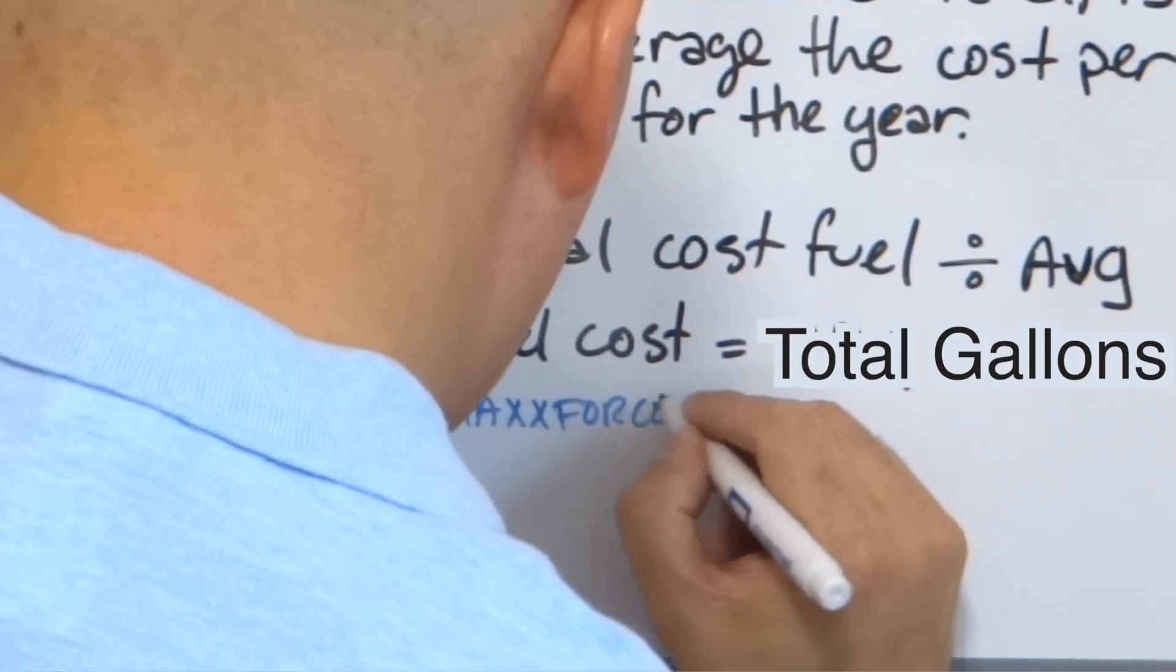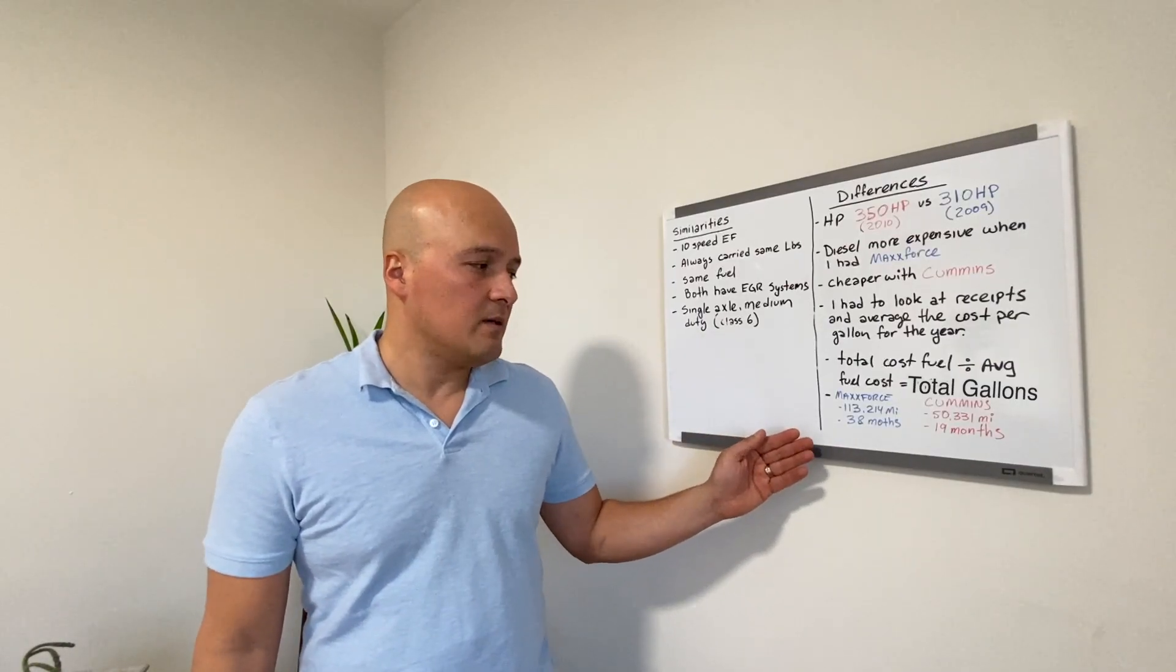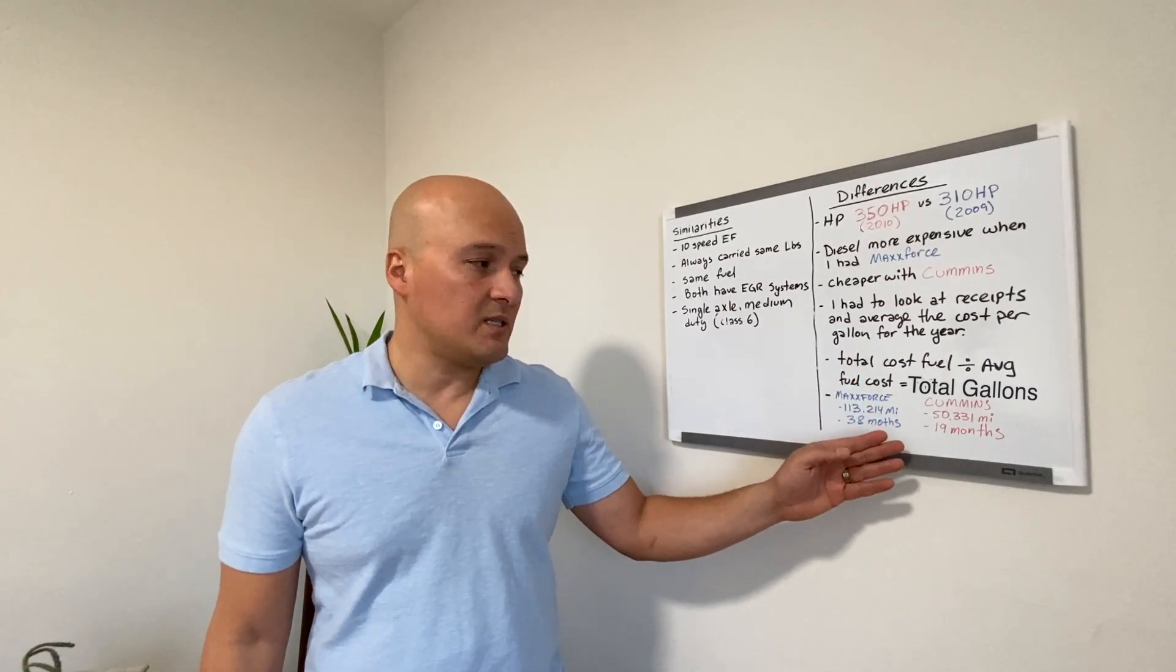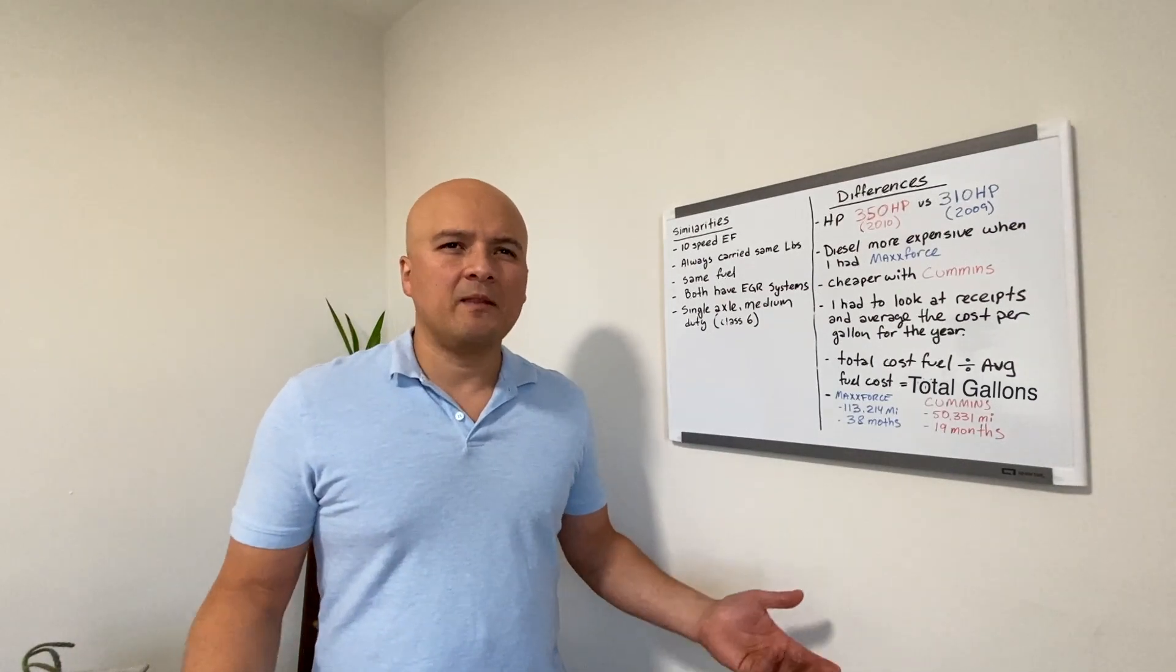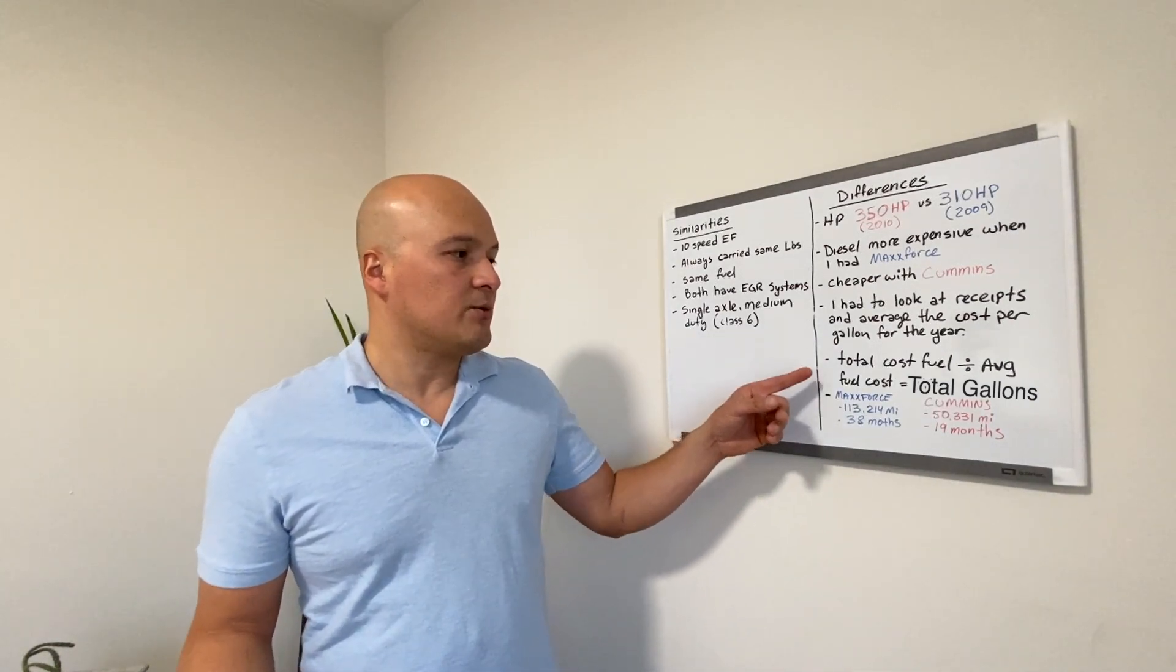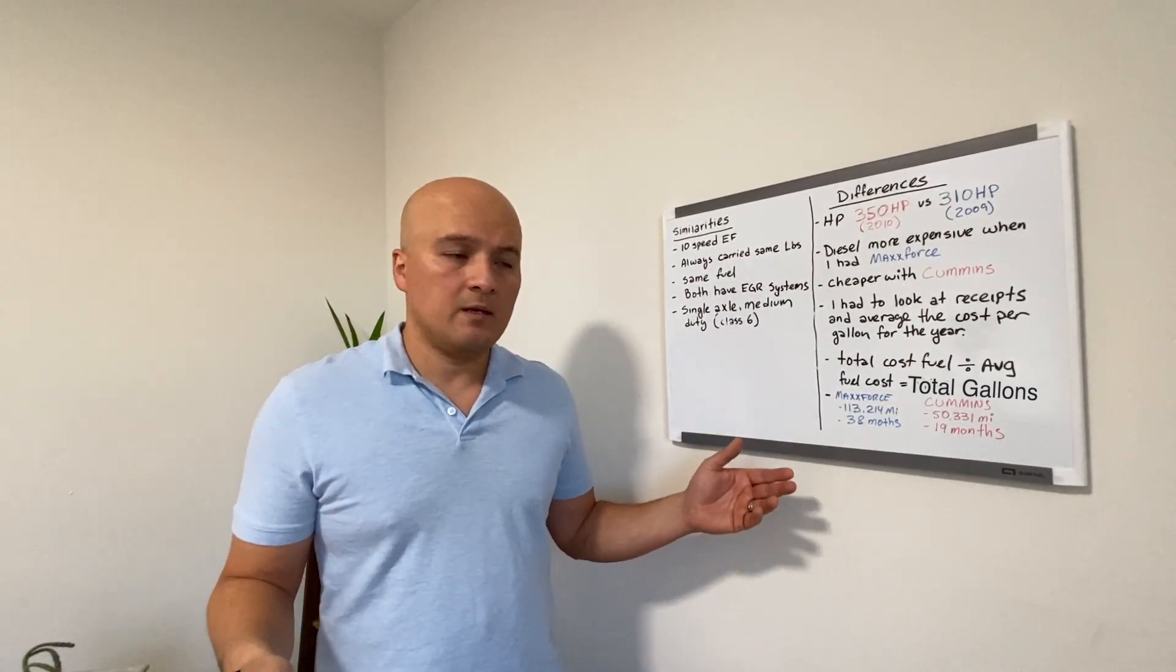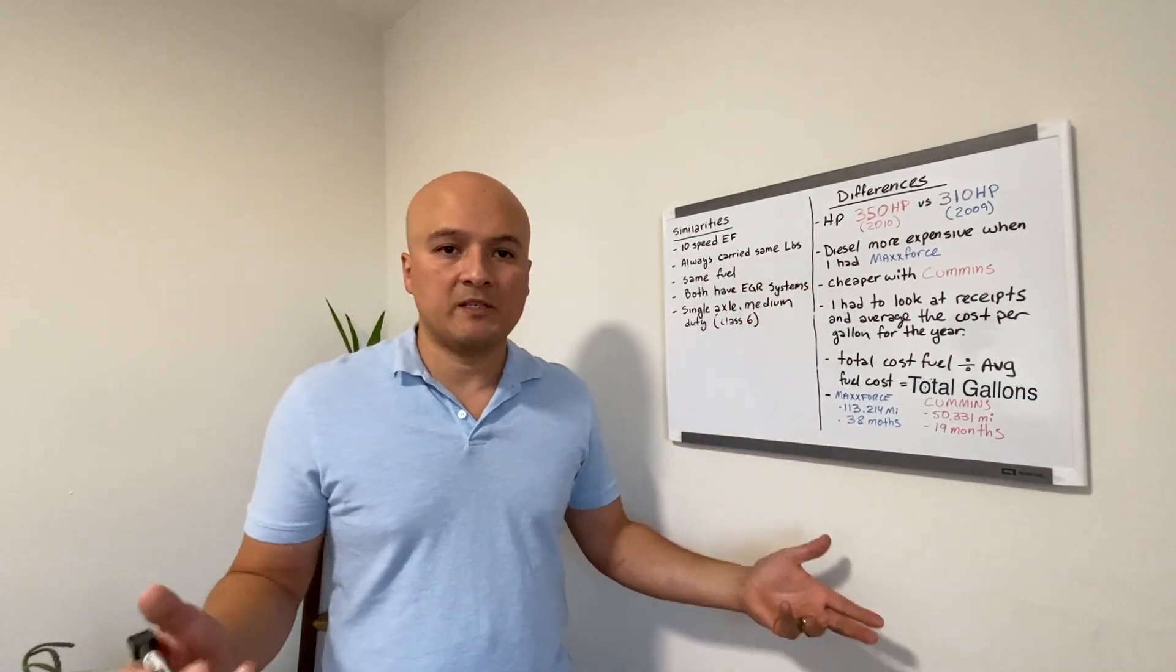Now, one of the biggest differences between the metrics of both engines is the amount of time that I've had it and the mileage that I drove it. So for the MaxForce, I drove it 38 months and the Cummins, I had it for 19 months and drove it for 50,331 miles. Now, you might be thinking, but that's not fair. The reality is that it doesn't really matter because we are measuring the miles per gallon within this amount of time and mileage. Now, let me show you the total cost of fuel and the average price of the fuel that it cost when I owned these specific engines.